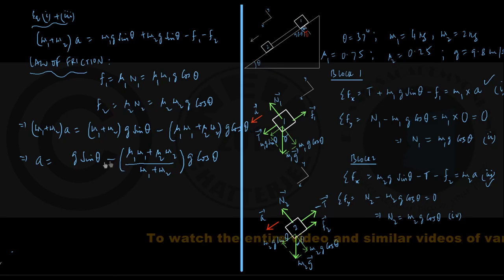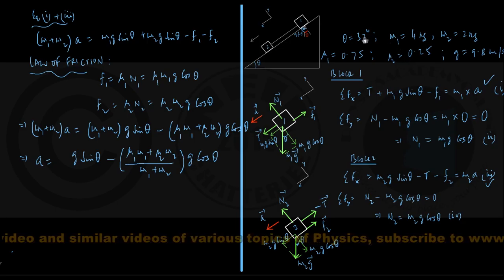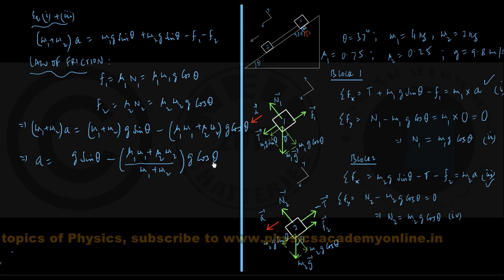We have got all the values with us, g is 9.8 m per second square, theta is 37 degrees, I will take sin 37 degrees to be 0.6, cos 37 degrees to be about 0.8, mu1.